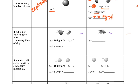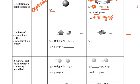Second one tells us that the blob of clay collides with a stationary blob of clay. So we see that we have two objects that are separate, then we've got the collision, and then they're together at the end.